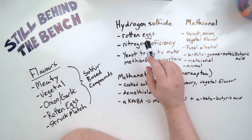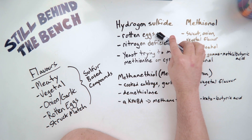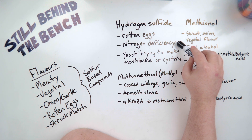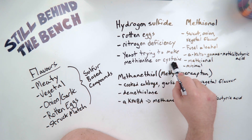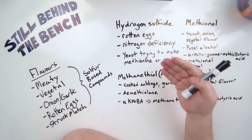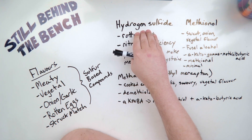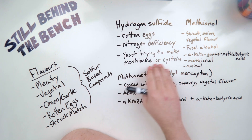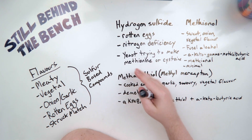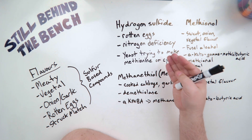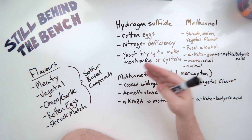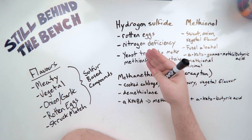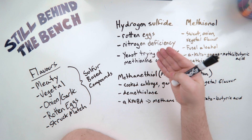I believe I've spoken about the production of hydrogen sulfide in the past, but I'm going to do it again here. It has a rotten egg smell. It comes about as the result of a nitrogen deficiency when the yeast is trying to produce methionine or cysteine amino acids and there isn't enough nitrogen to finish producing that amino acid. So hydrogen sulfide is an intermediate compound in this metabolic pathway, and since there isn't any available nitrogen, the yeast will just dump this hydrogen sulfide out of the cell since holding it for too long is toxic to the cell. So all of a sudden you start getting this rotten egg smell in your wash or mash.